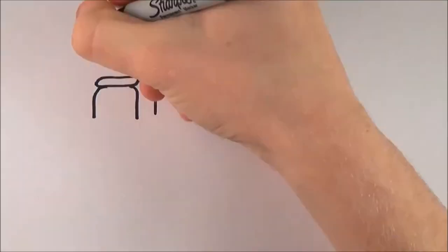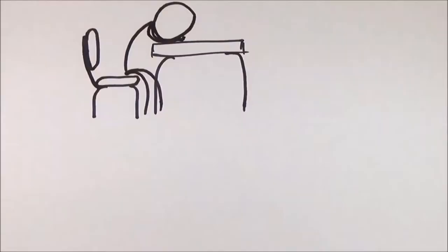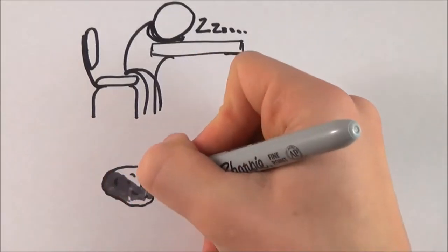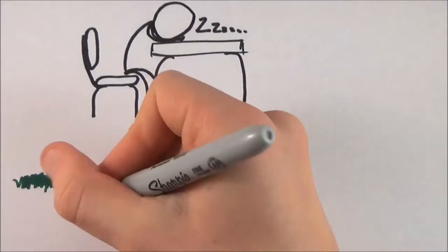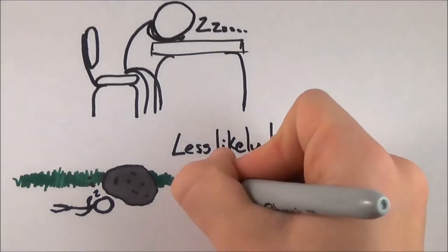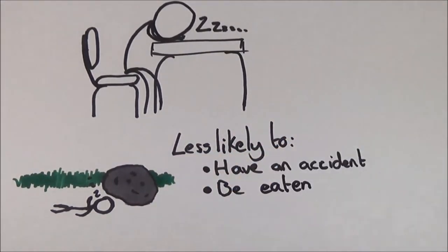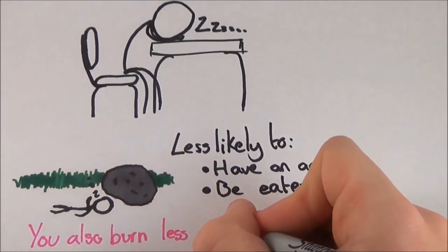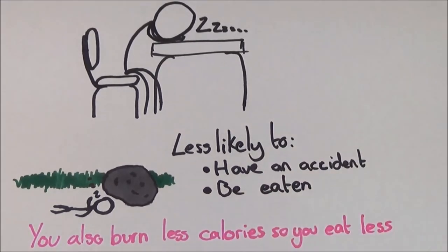Some believe that sleep is a way to conserve energy and stay out of harm's way. Animals that stay still and quiet during part of the day are less likely to have accidents or be eaten by predators. Sleeping also uses up fewer calories than being awake, meaning that animals need to find less food each day than if they didn't sleep.